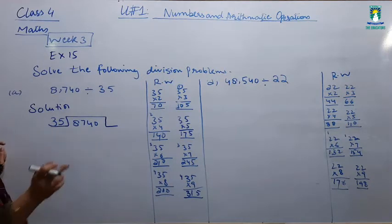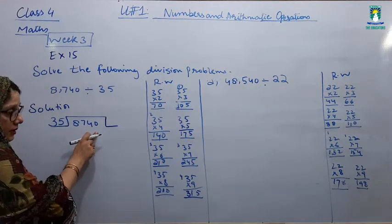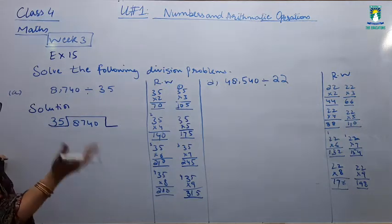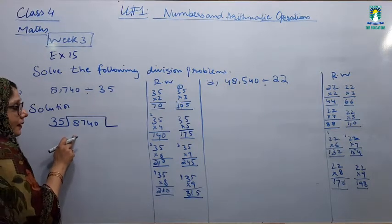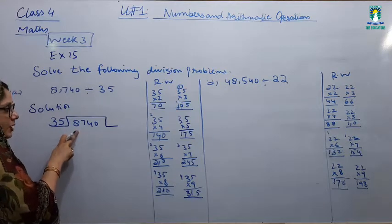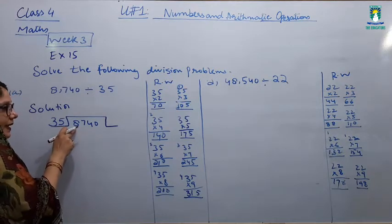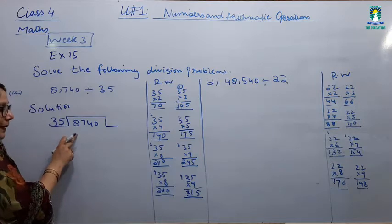We have to split into 8, 7, 4, 0. We have to start from the unit place. Then, we have to start from the biggest place. The biggest place is 8. We have to start from the biggest place, that is 8,000 place.